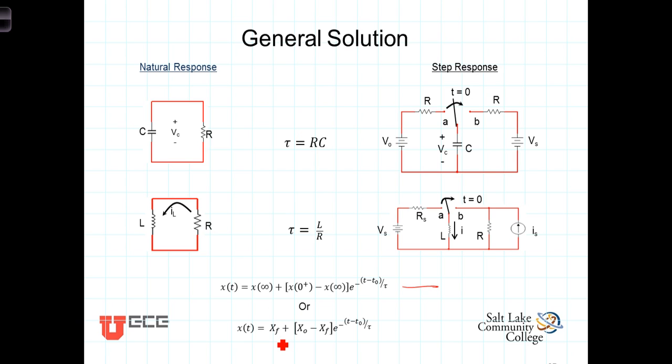So again we can say any voltage or current in these circuits, representing that voltage or current as x as a function of t, is equal to x final plus x initial minus x final e to the minus t minus t0 over tau.